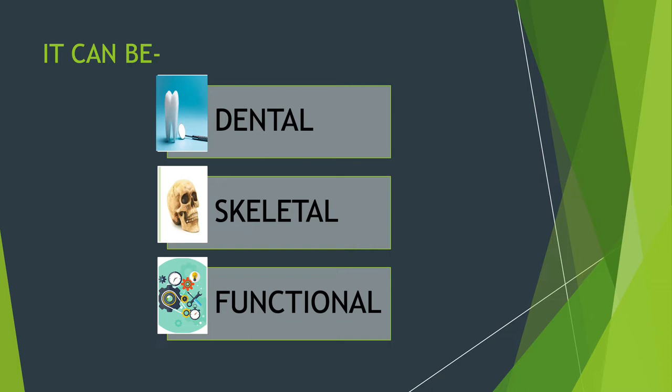In dental posterior crossbite, the tooth is in a crossbite relation to its opposite teeth. The second type is skeletal posterior crossbite, where the teeth have erupted in their normal position, but the upper and/or lower jaw are abnormal in size. The upper jaw can be small, the lower jaw can be large, or just the upper jaw is smaller than it should be — either of these situations will give rise to a posterior crossbite.